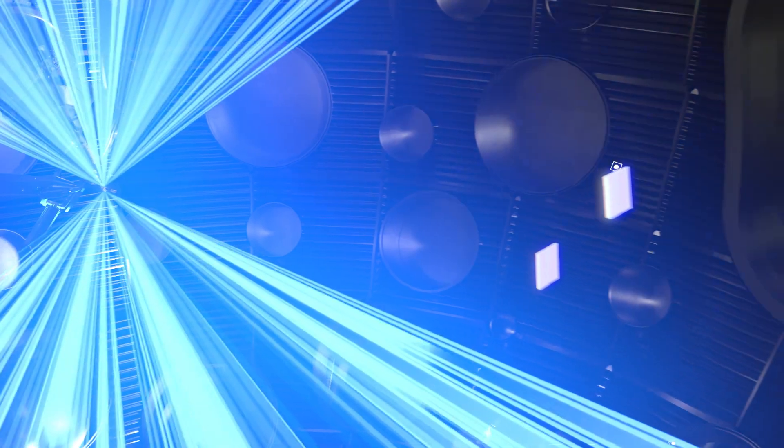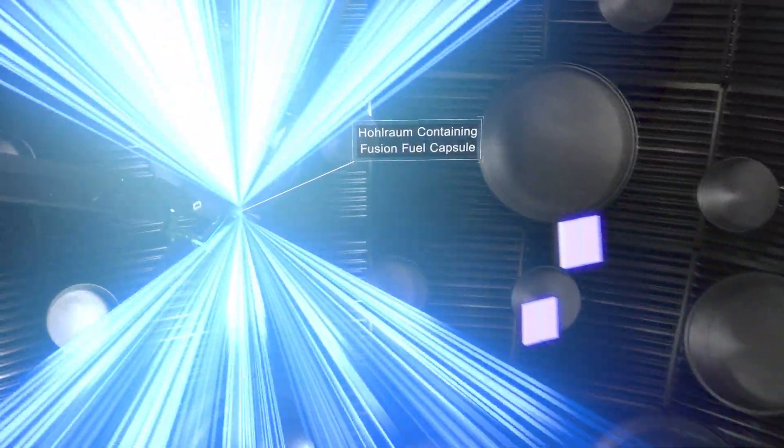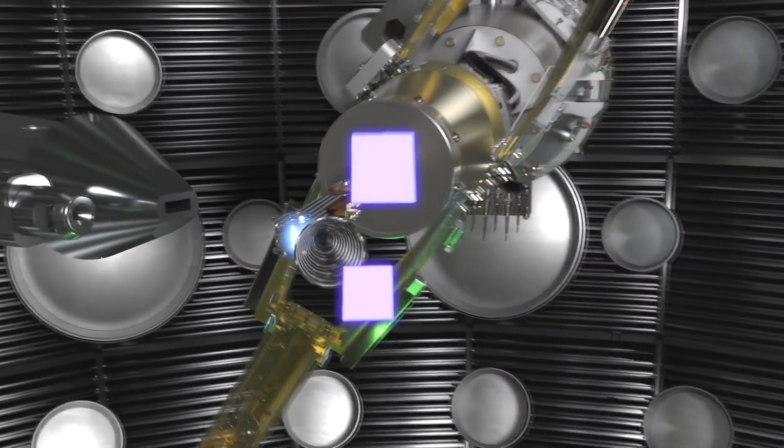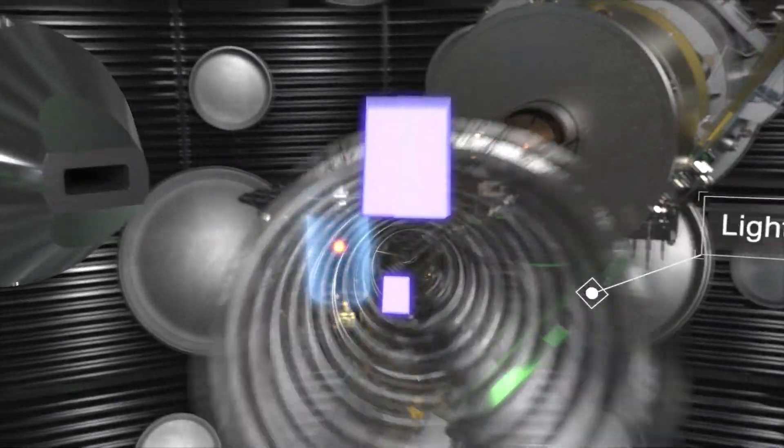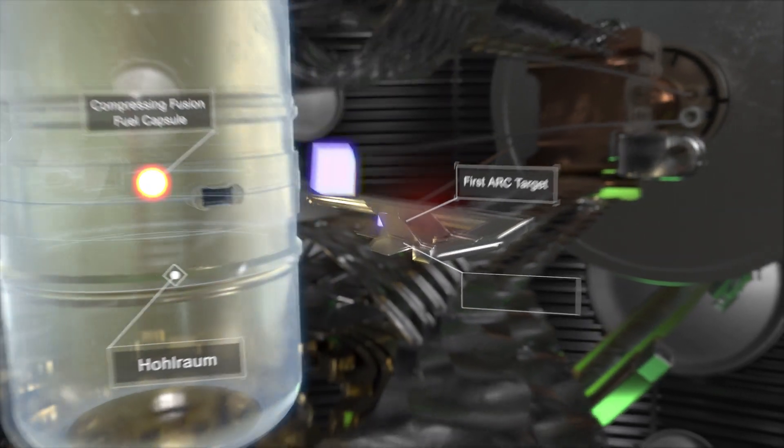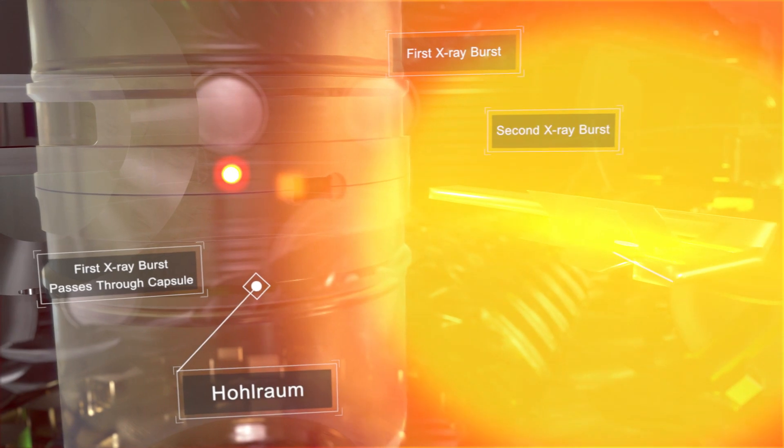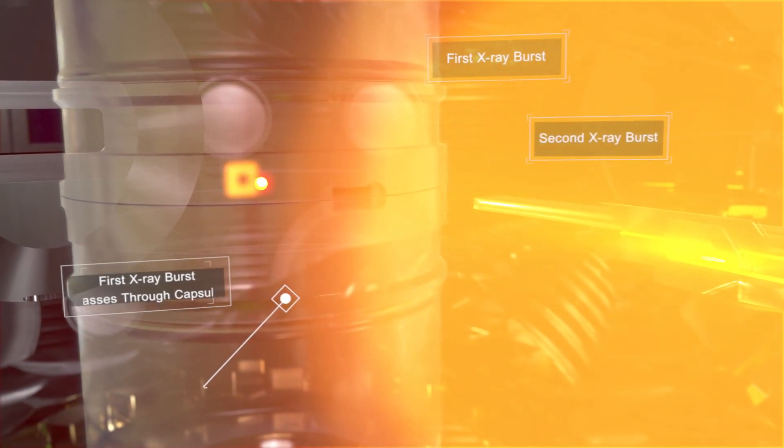NIF's optimized main lasers, shown now in blue, have already entered the target chamber and hit the hohlraum. Following behind, each ARC beamlet pair shrinks and merges together, then strikes separate ARC targets, producing two X-ray bursts that enter the hohlraum and pass through the collapsing fusion fuel capsule in succession.